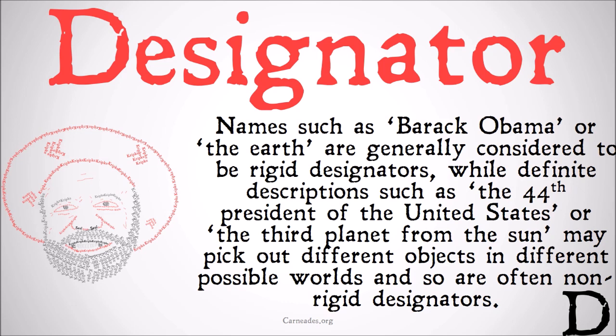Note that there are parts of those definite descriptions that do rigidly designate things. 'The United States' is going to be a rigid designator because it's a name. 'The sun' is a name of a particular star — once again, going to be a rigid designator. But the full statement 'the 44th president of the United States' isn't going to be a rigid designator because it's not going to pick out the same individual across possible worlds. There's another possible world where someone else is the 44th president, and another possible world where a different planet is third from the sun.